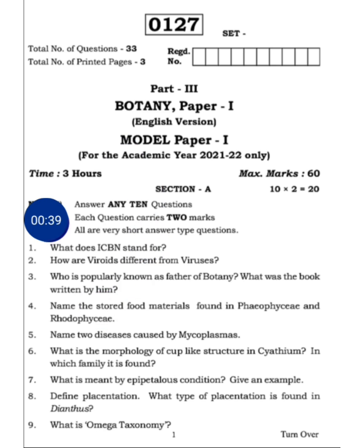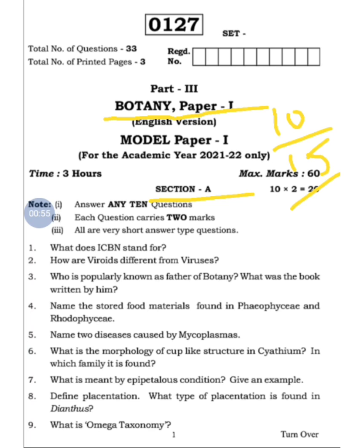Now, Botany first year model paper analysis — Section A. Previously 10 was the minimum, but now 15 is the total, making it 10 rials. This is very easy for students. If you prepare according to the blueprint, you can score full marks this year. This is the best option for first year students this year.